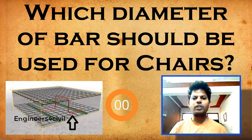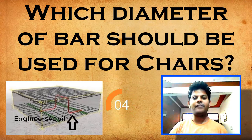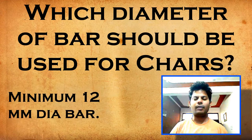Which diameter of bar should be used for chair? You have five seconds to comment your answer. Minimum 12 mm dia bar is used for chair.